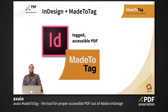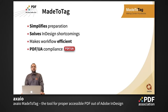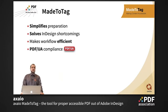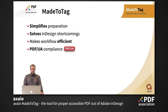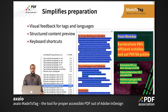Me2Tag as a plugin helps you simplify the preparation process in InDesign directly. It also solves some of InDesign's shortcomings in creating tagged PDFs, makes your workflow way more efficient, and creates PDFs compliant with the PDF UA standard. One key advantage is visual feedback on how your structure tags and languages in your document look.